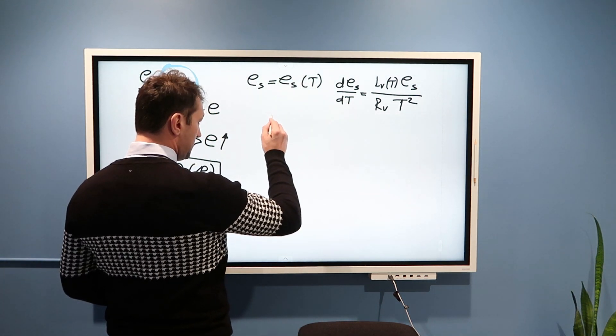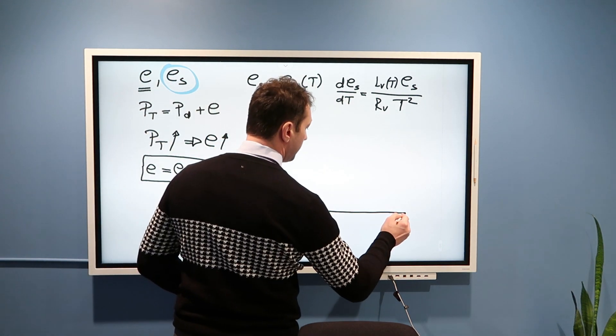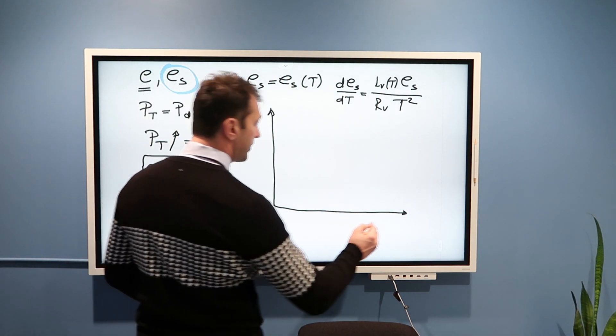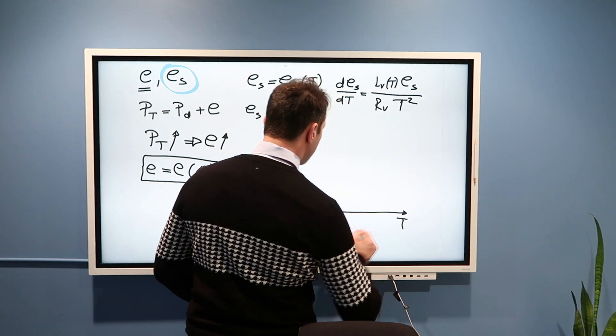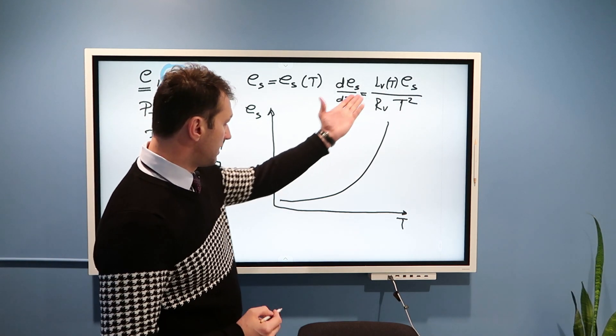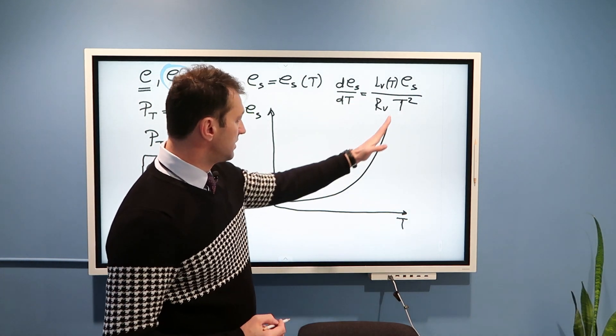And this dependency on a graph looks something like this. If we have here saturation vapor pressure, and here we have temperature, then dependency looks something like that. It is a non-linear, as we can see from this equation, dependency.